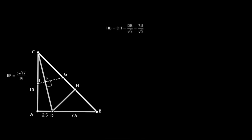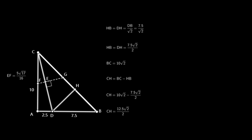Now let's figure out the length of EG. From point D, draw a perpendicular line to BC, intersecting at point H. DB equals AB minus AD, which equals 10 minus 2.5, equals 7.5. Triangle DHB is also an isosceles right triangle, so HB equals DH equals DB over the square root of 2, which equals 7.5 times the square root of 2 over 2. In isosceles right triangle ABC, BC equals 10 times the square root of 2. CH equals BC minus HB, giving CH equal to 12.5 times the square root of 2 over 2.